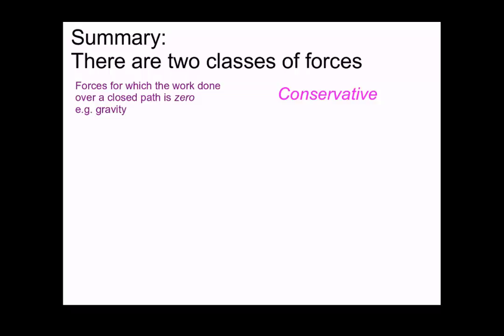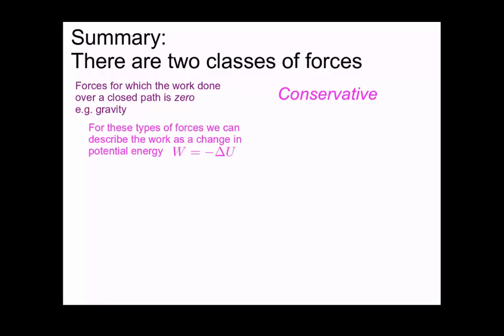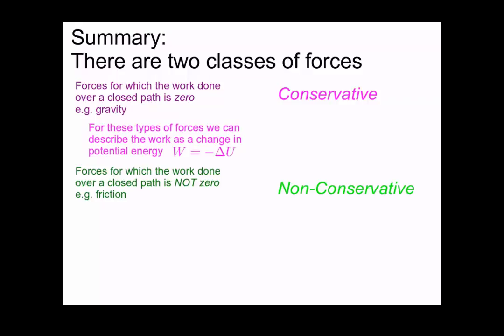Let's summarize. We've seen that there are two classes of forces. Forces for which the work done over a closed path is zero, such as gravity — these are known as conservative forces — and for these we can describe the work done as a change in potential energy: work equals negative delta U. We also have forces for which the work done over a closed path is not equal to zero, such as friction. For these non-conservative forces, we cannot describe the work in terms of a change in potential energy.